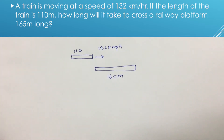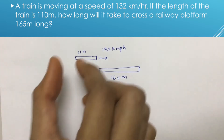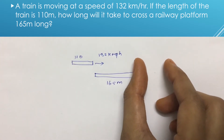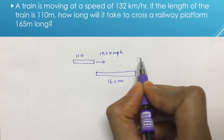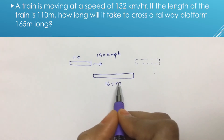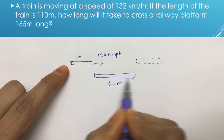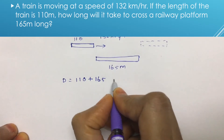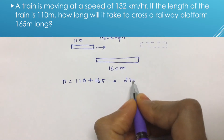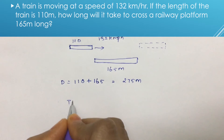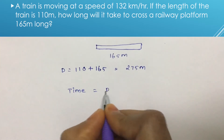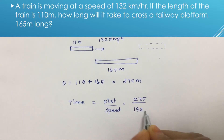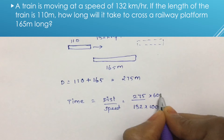In this question, both the train length and the platform length must be crossed. The train starts at one end and the crossing is complete when the end of the train clears the platform. So the total distance is 110 plus 165, which equals 275 meters. Speed is 132 km per hour, converting to meters per second.